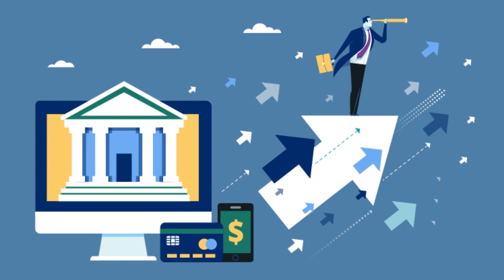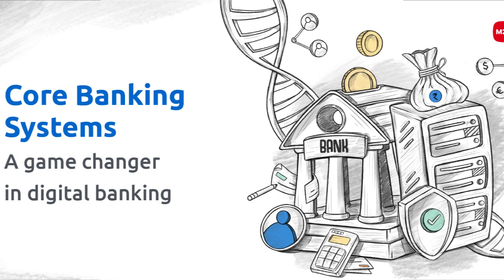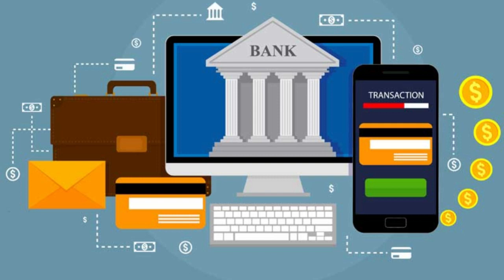What is actually a core banking system? Core banking system is the primary information system in a banking institution that supports and automates the bank's most essential banking features. It acts as the central nervous system of the bank, managing core banking processes and facilitating seamless communication among various departments and branches. You can think of this as the heart of the banking system.